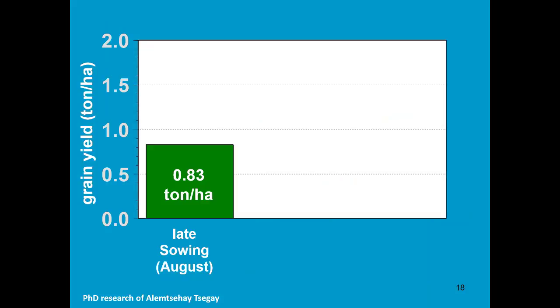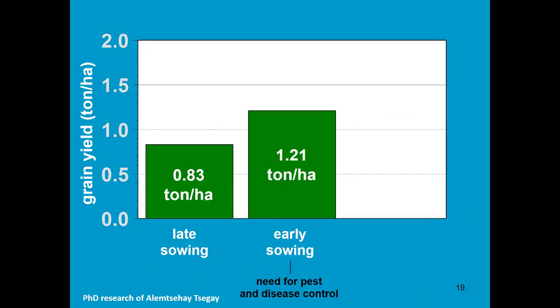Field experiments show that with sowing two to three weeks earlier, you can increase the yield by 50%. The actual low yield of 0.8 tons per hectare becomes 1.2 tons per hectare.